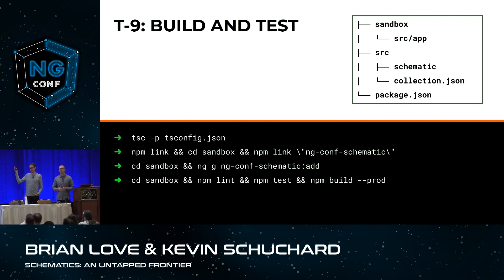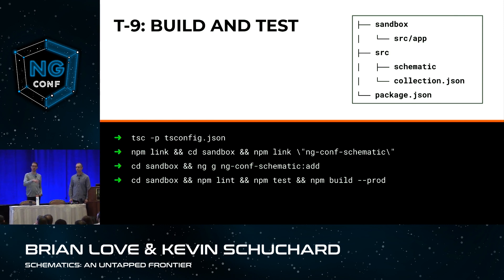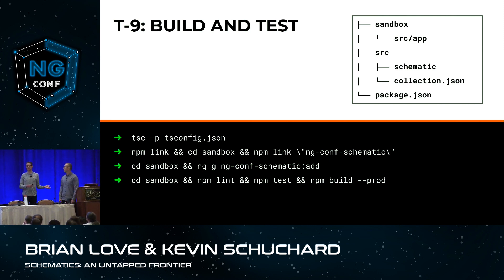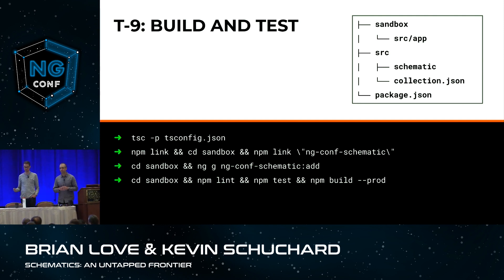The sandbox allows us to execute our schematic against a version-controlled application and quickly see how it changed, then reset it and run it all over again — running inside the context of the CLI, not the schematic CLI. It's pretty simple: we ng new up an application called sandbox, which lives inside the blank schematics project we generate. We version control that so we get diffing between each run. We write schematics in TypeScript, compile with TSC, and through NPM linking we link our schematic into our sandbox to execute it in the context of the Angular CLI. We can then add scripts that CD into the sandbox, execute the schematic, and optionally run lint, tests, and a prod build to assert everything's working.